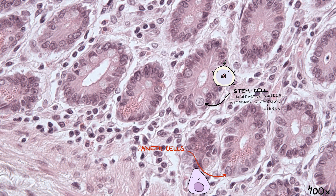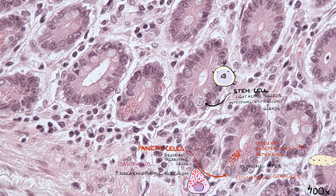Paneth cells, located in the basal portion of the crypt, are protein-secreting cells with a very well-developed rough endoplasmic reticulum, which makes them basophilic. These proteins are stored in the apex of the cell in eosinophilic secretory granules. The enzymes include lysozyme, phospholipase A2, and defensins. The defensins bind to the membranes of bacteria and break them down. Paneth cells play a part in the regulation of the microenvironment of the intestine.